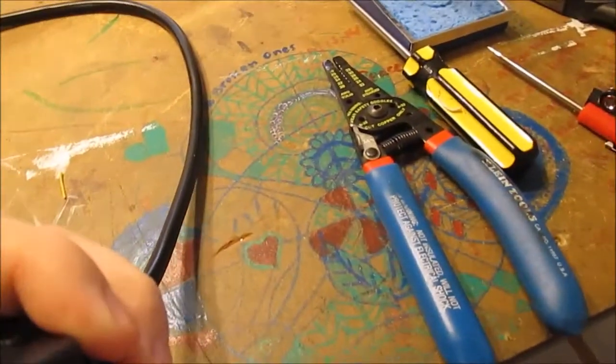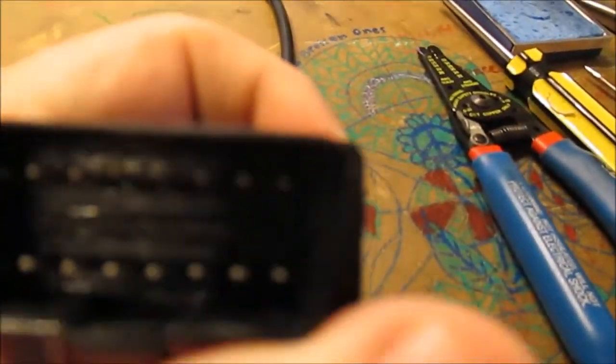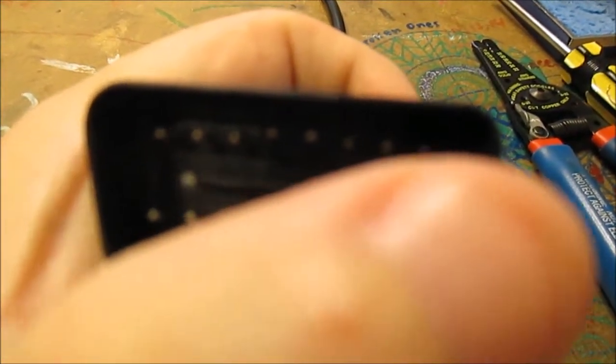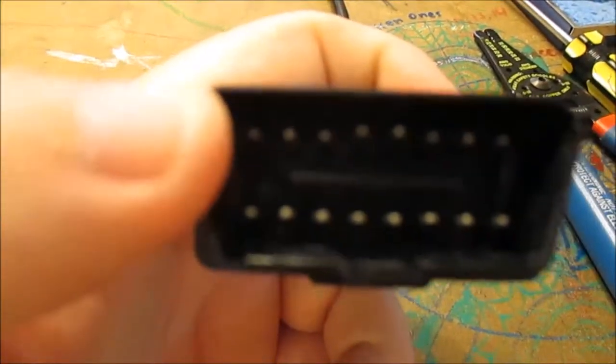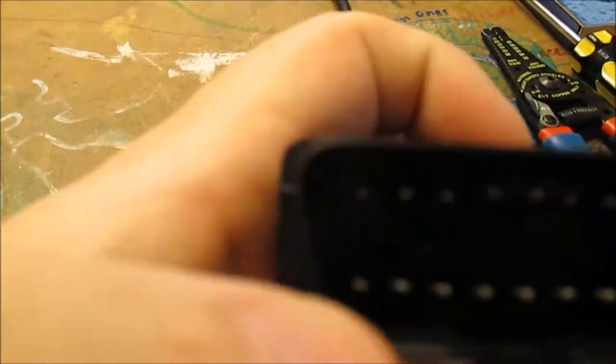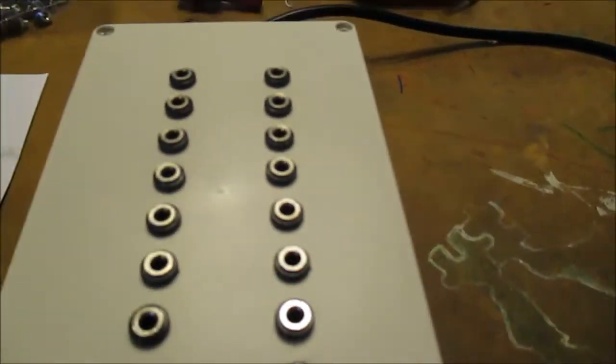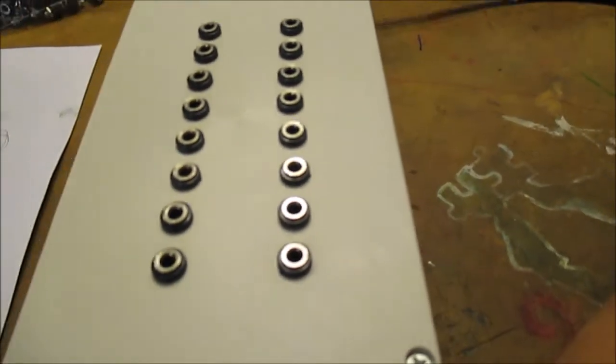I have my tool made, got it all put together. All it is is this box which has 16 banana plugs, and this cable comes out and goes to the DLC connector. If you look at the connector there's numbers in here - you can't really see them though - but this pin is one, this pin over here is eight, and this is nine through 16.